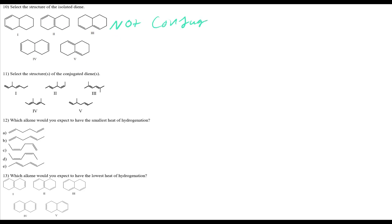Question 10: select the isolated diene — meaning not conjugated. Conjugated = double bond, one gap, double bond. Options 1, 2, and 3 are all conjugated. Option 4 has too many gaps between the double bonds — more than one single bond separating the double bonds — so it is isolated. Number 4 is the correct answer.